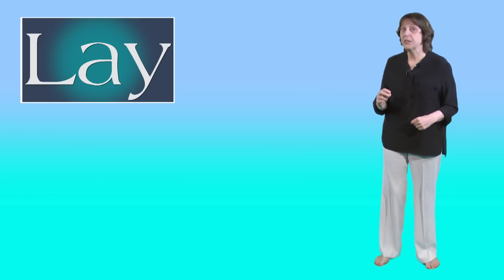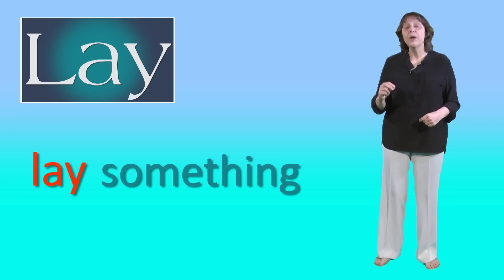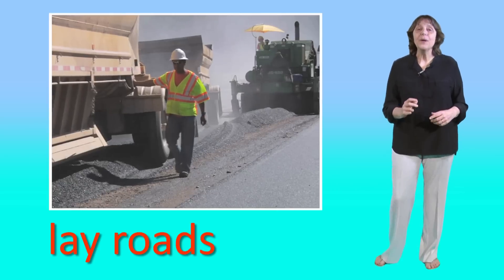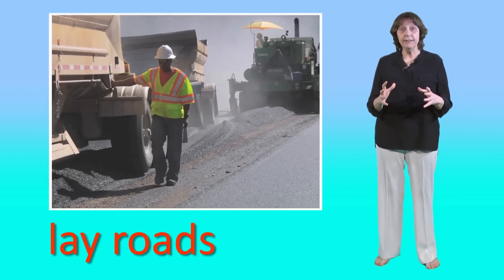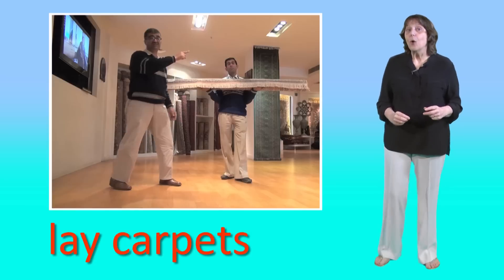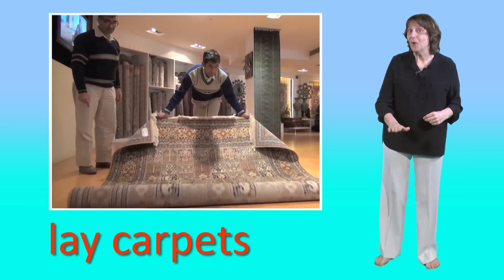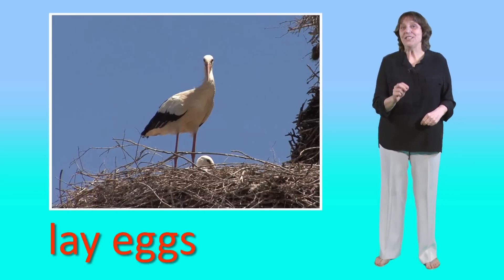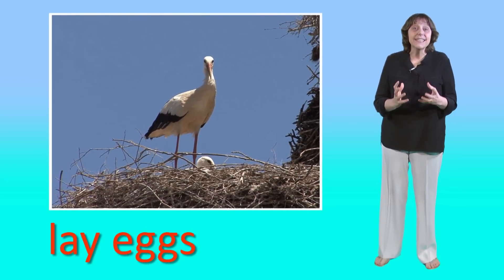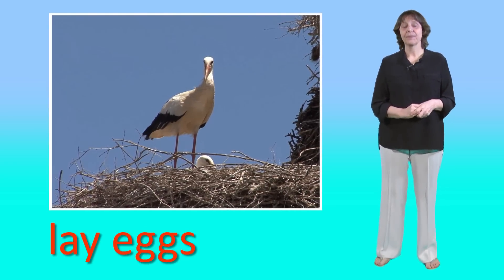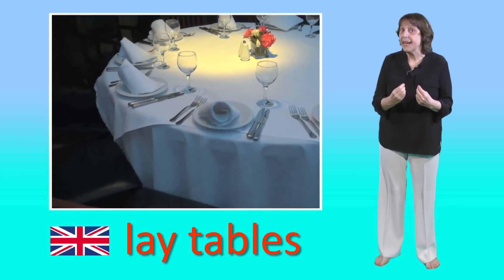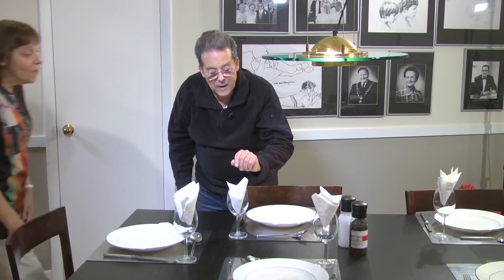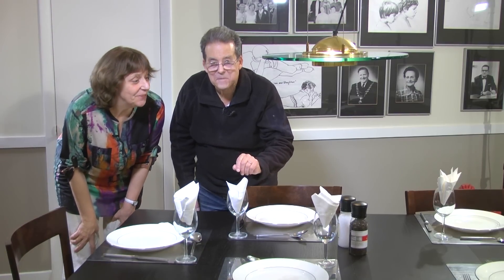Lay is a transitive verb, so it has an object. We always lay something. We can lay roads — build them by laying down asphalt. We can lay carpets, put them on the floor. We can lay bricks to build walls. Birds lay eggs and then they sit on them till they hatch. In British English we lay the table. Oh, you've laid the table — thank you. In America we say set the table, and we can say that in British English too.